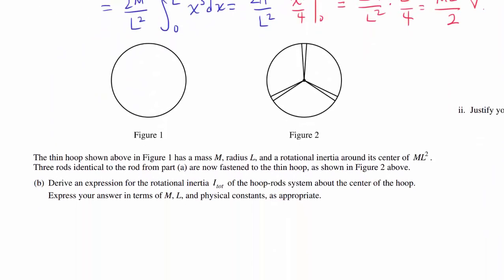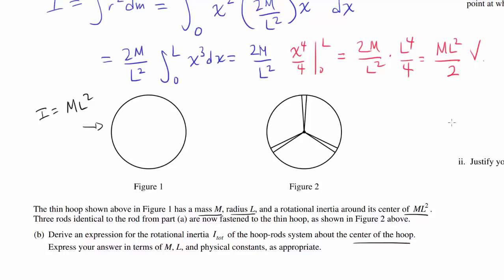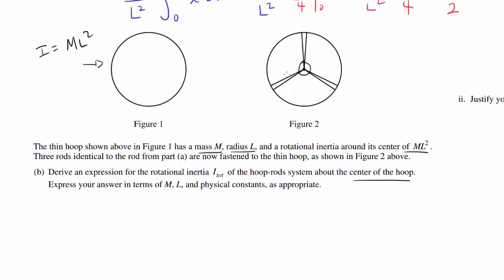Now let's go to Part B. The thin hoop shown above in Figure 1 has a mass of M, radius of L, and a rotational inertia around the center of ML squared. So for this one, the rotational inertia is ML squared. Three rods identical to the rod from Part A are now fastened to the thin hoop as shown in Figure 2. We need to derive an expression for the rotational inertia I total of the hoop-rods system about the center of the hoop.